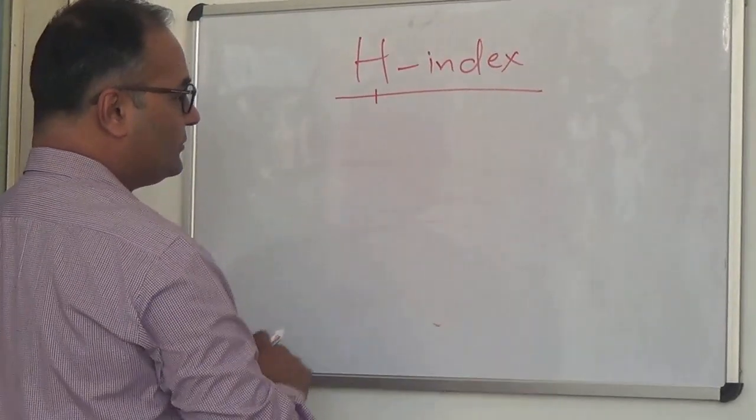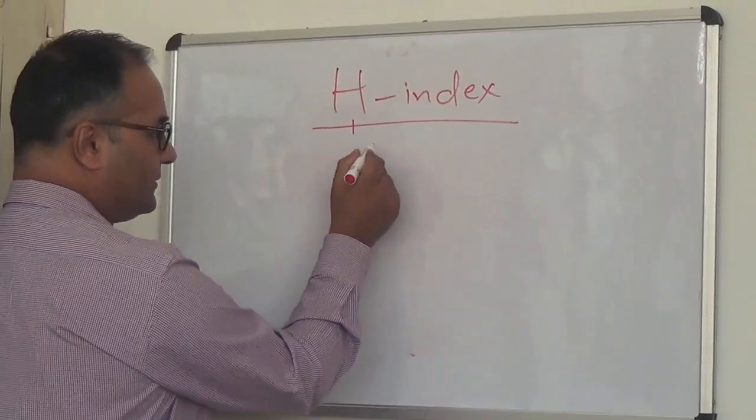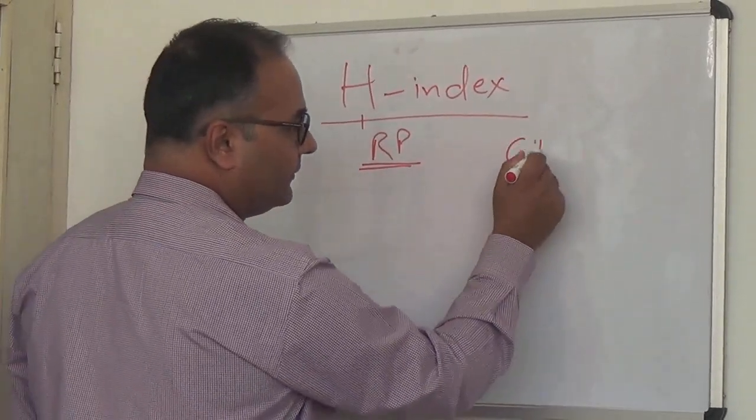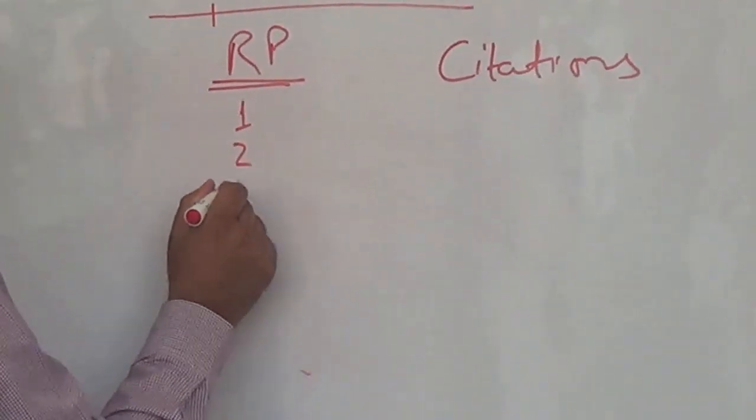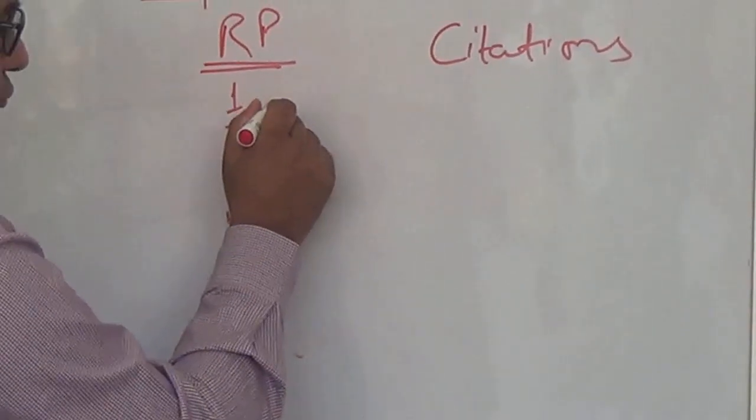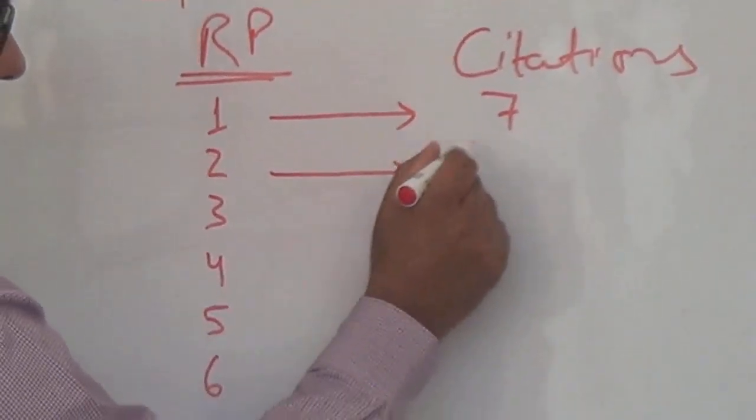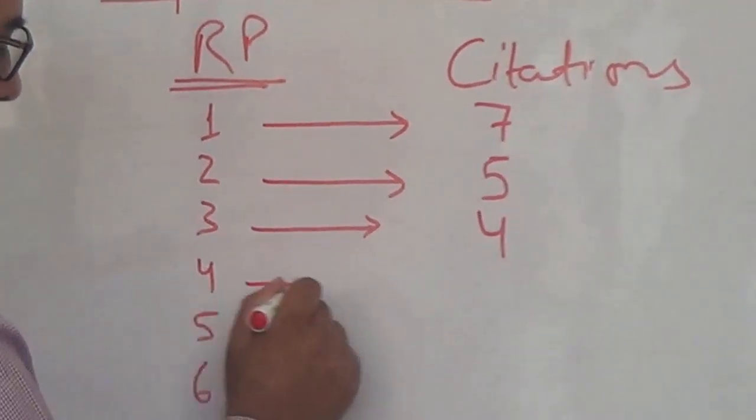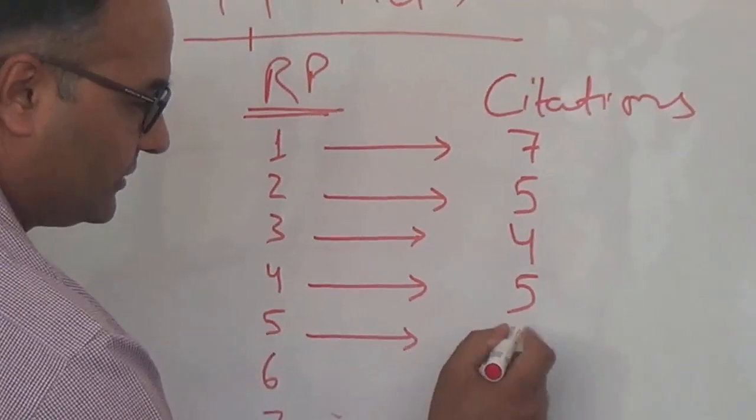Let us try to understand it through an example. If there is an individual researcher who has got, say, 7 research papers, I write here count of research papers and count of citations. Research paper number 1, 2, 3, 4, 5, 6, and 7. Let us assume research paper number 1 has been cited 7 times, number 2 has been cited 5 times, number 3 has been cited 4 times, number 4 has been cited 5 times, and so on. I am writing just some random numbers.